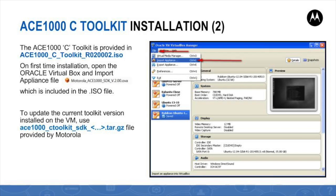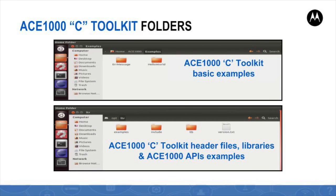The archive file name starts with the fixed prefix ACE1000_C_toolkit and its suffix is set according to the release toolkit version. If the developer uses an installed toolkit from a previous release, he may update the toolkit to a new release by installing a proper C toolkit SDK file included in the archive.iso file of the newer release. After installation completion, the first-time developer should be familiar with the ACE1000 C toolkit folders to use on the virtual machine to build and compile his C application. There are two main folders under the virtual machine file system, one of which includes two basic C application examples.